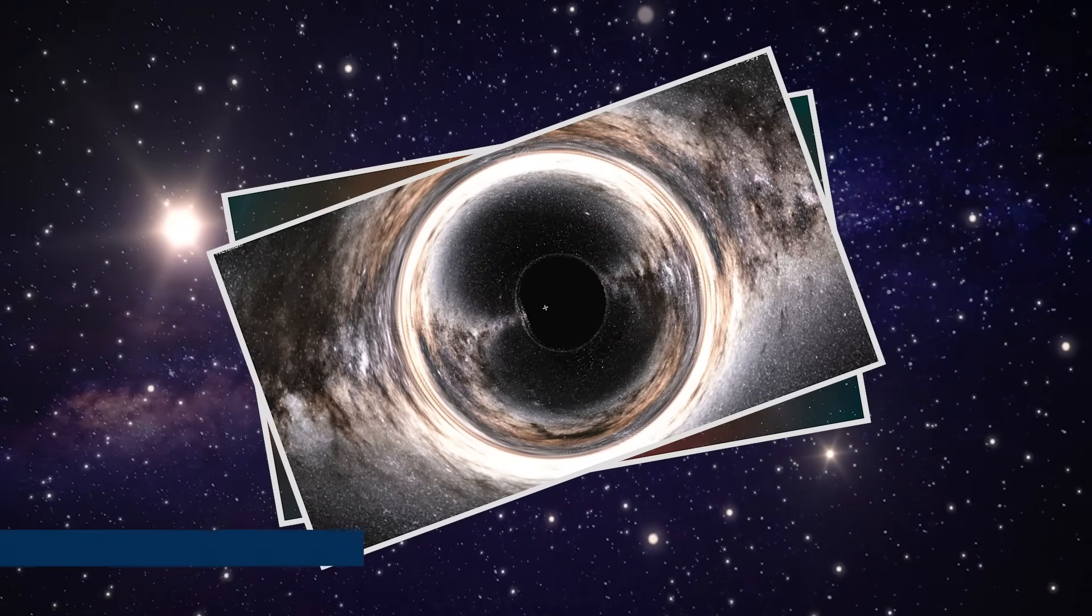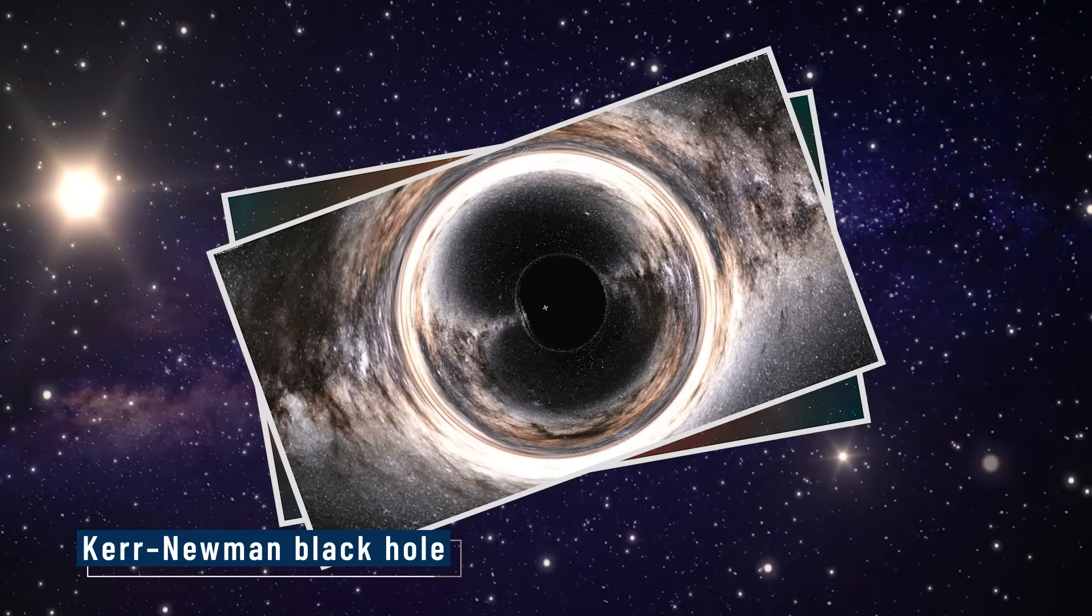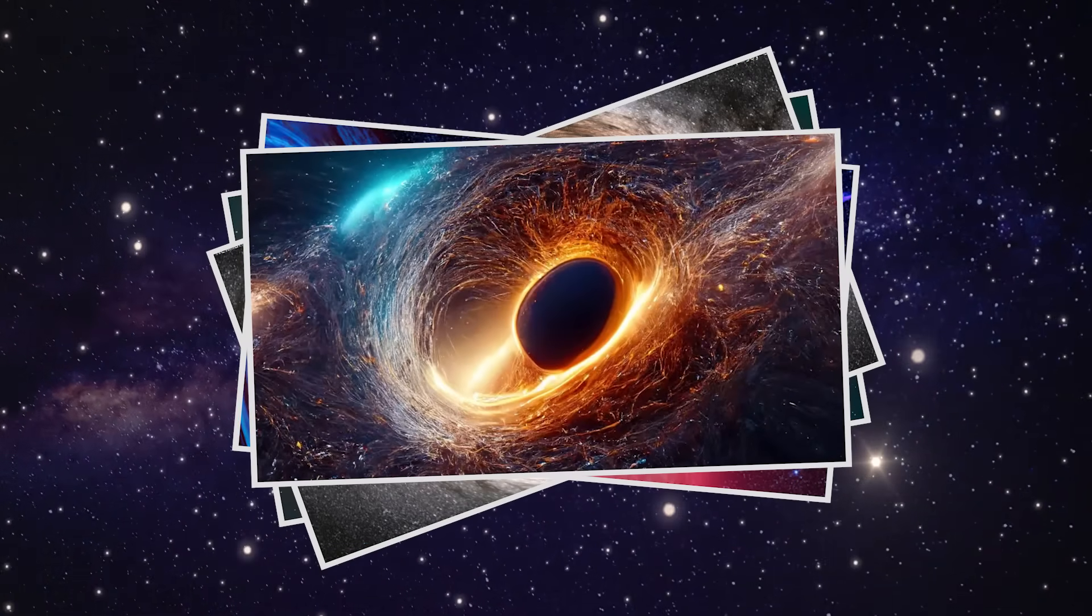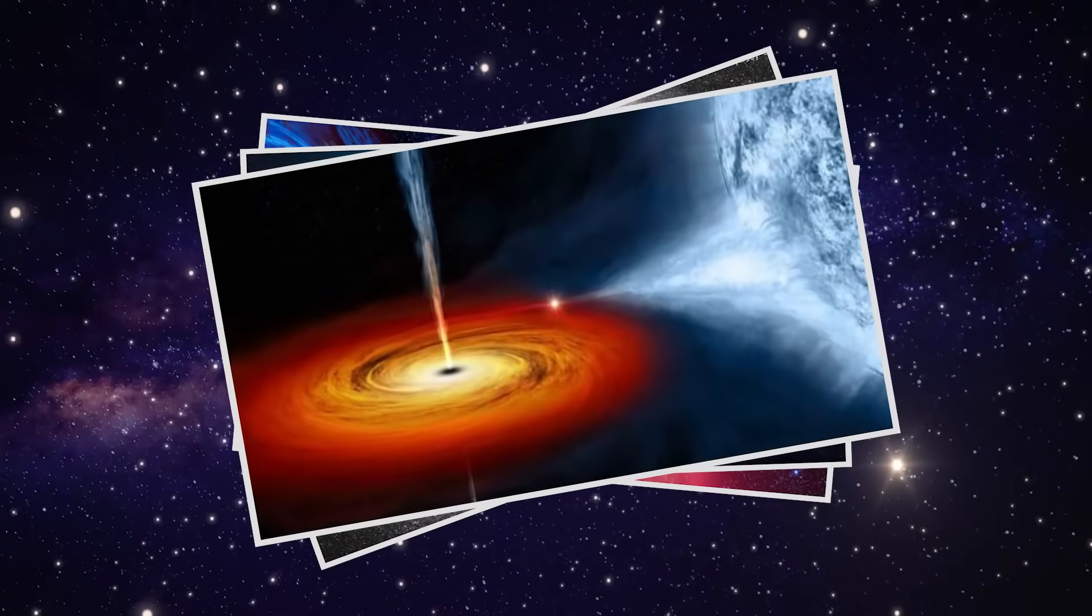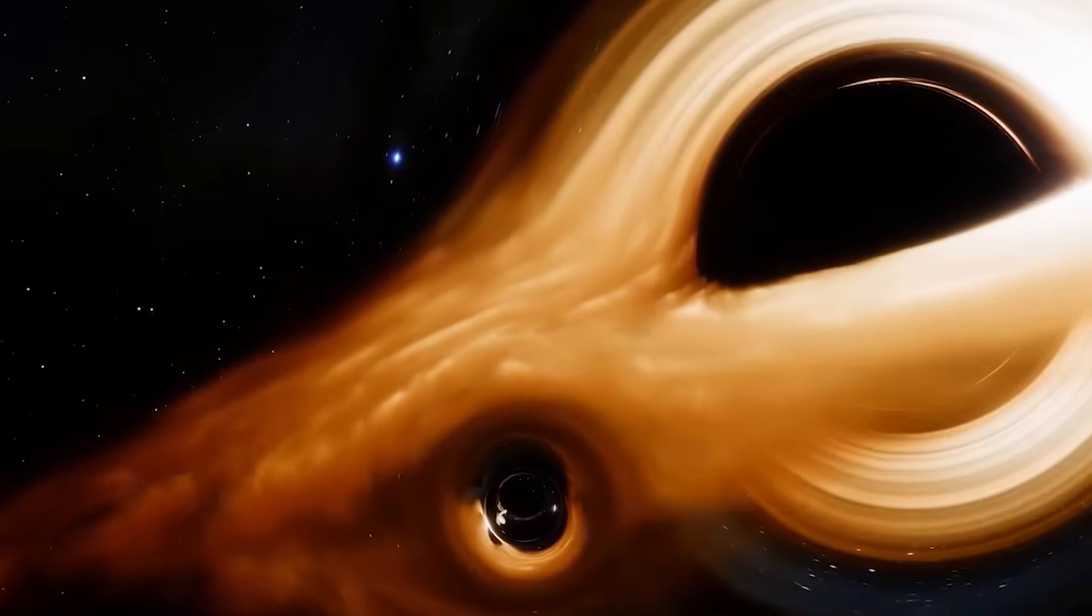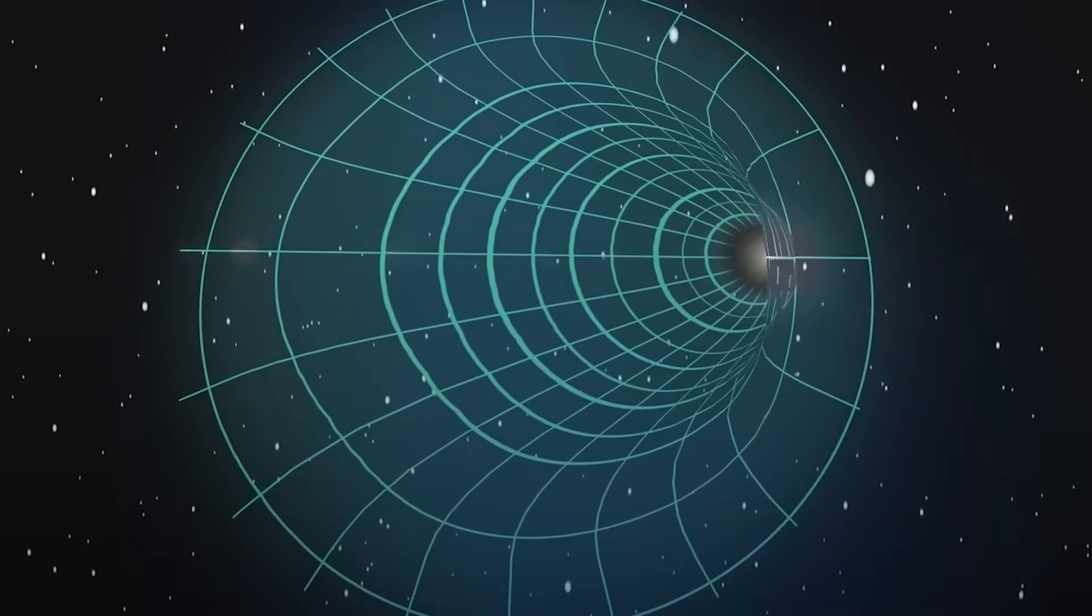Now add rotation. That gives you a Kerr-Newman black hole, one that's both charged and spinning. These black holes are anything but simple. As they rotate, they actually drag the space around them. This is called frame dragging. And it could make time behave in strange ways.